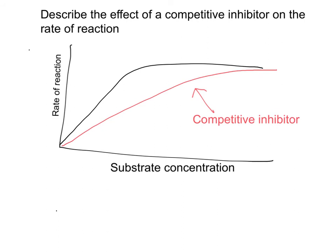This graph asks you to describe the effect of a competitive inhibitor on the rate of the reaction. You can see that the competitive inhibitor decreases the rate of reaction at a given substrate concentration. However, if you continue to add more substrate so the substrate concentration is increasing, eventually the rate of reaction reaches the same rate as a reaction with no inhibitor in it. It will reach Vmax.